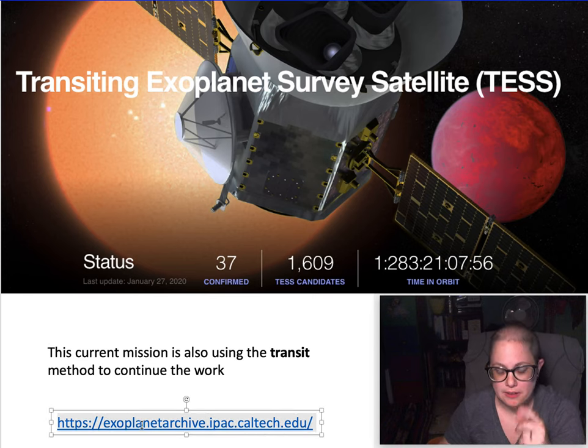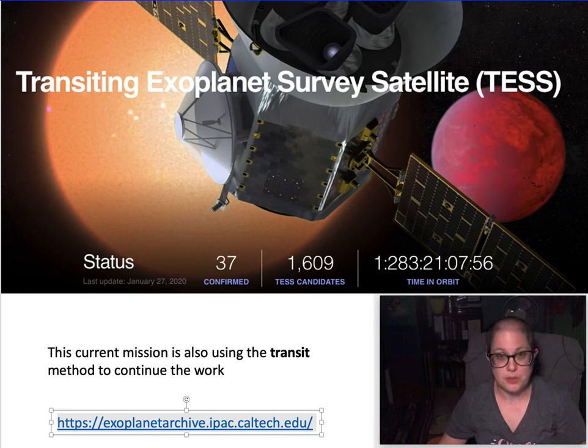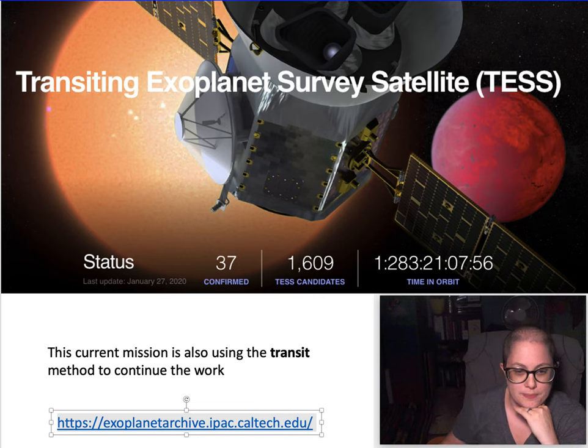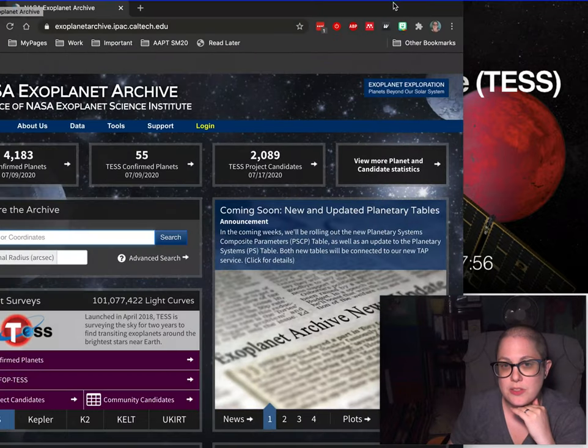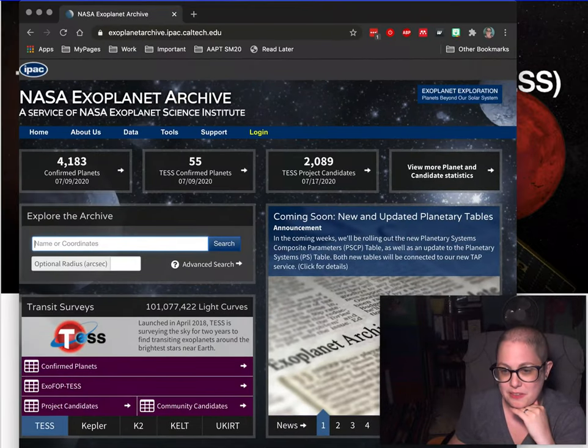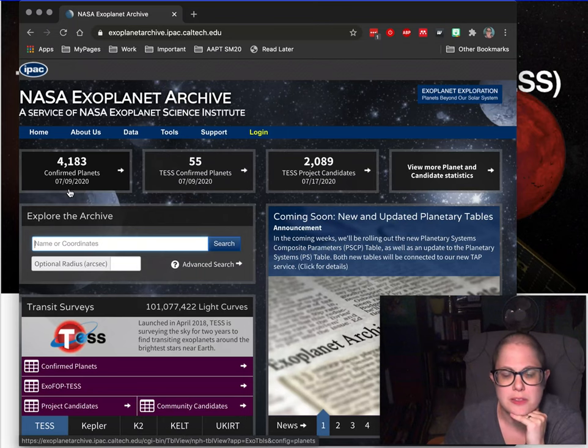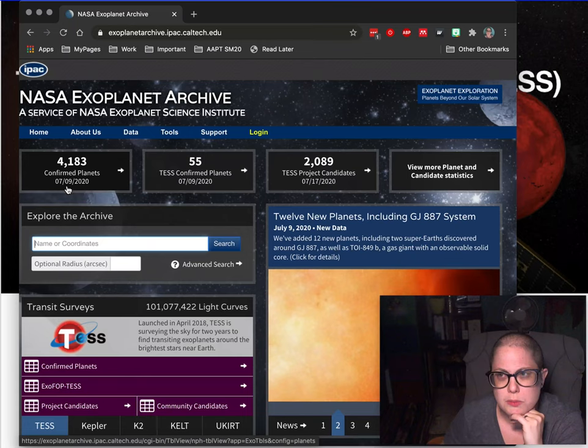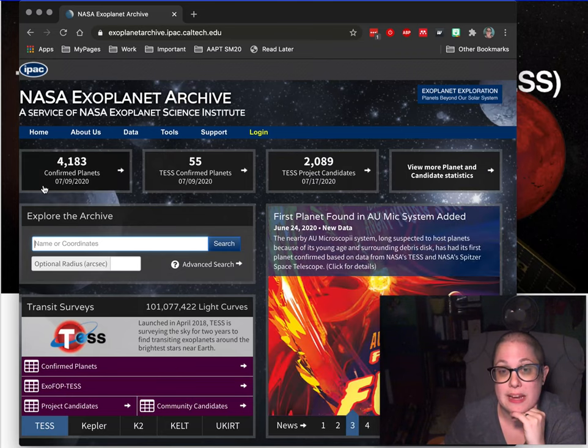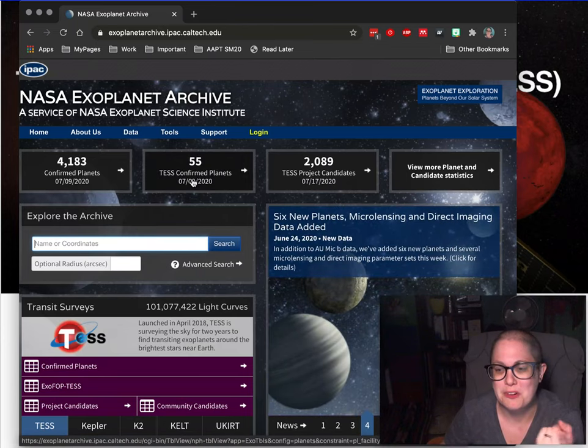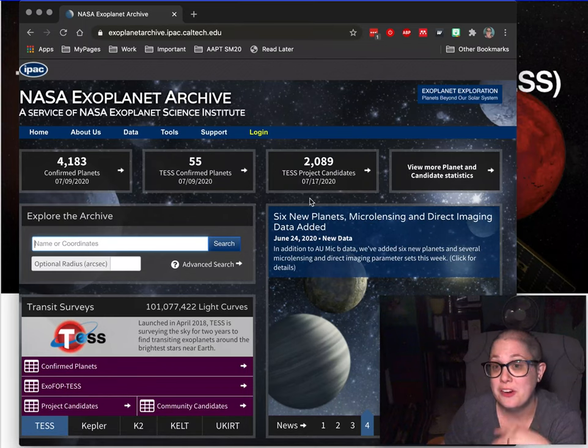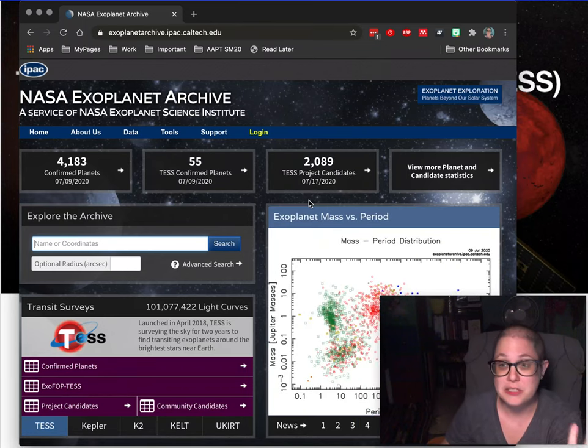I have a link to the exoplanet archive here because I like to check whenever I'm doing this particular lecture, because the number of exoplanets changes so rapidly because of these great discovery tools. I like to check this website because it'll tell you, so this is from a couple weeks, week and a half, that at that time there were 4,183 confirmed exoplanets that have been discovered. 55 of them came from TESS, so that's already more than January. There's a bunch more that are candidates, so they have to follow up observations to see if they're actually planets or if there are other reasons why these stars are dimming.